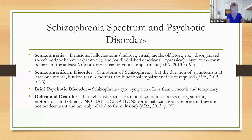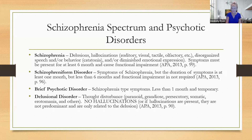Schizophreniform disorder is like schizophrenia, but the symptoms have lasted at least one month but less than six months, and functional impairment is not required. So we've got schizophreniform from one to six months. After six months we're going to go to schizophrenia. What's being suggested in schizophreniform disorder is that we may not have functional impairment yet — generally speaking you do, but they're saying it doesn't have to be present yet.